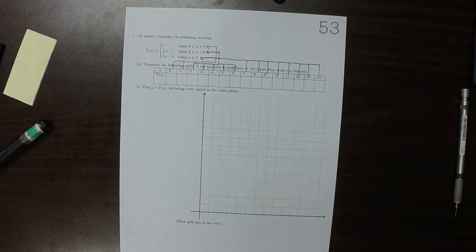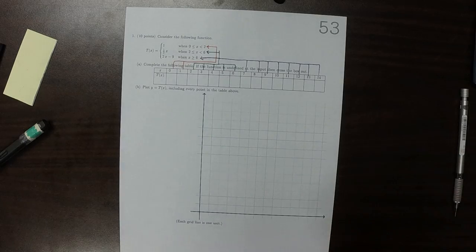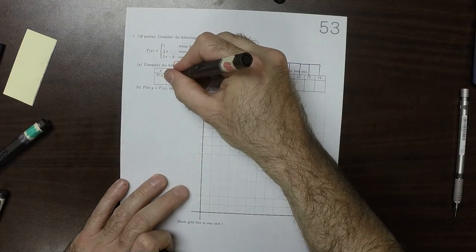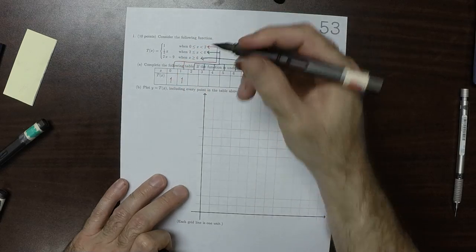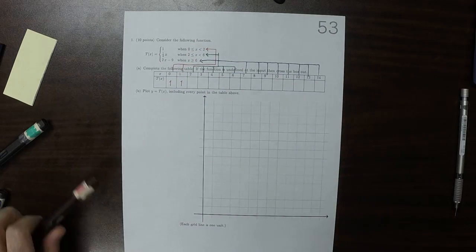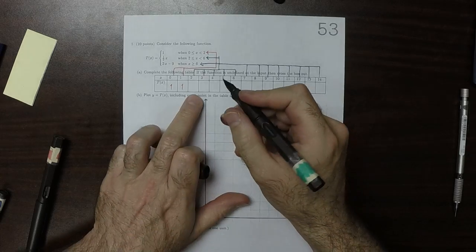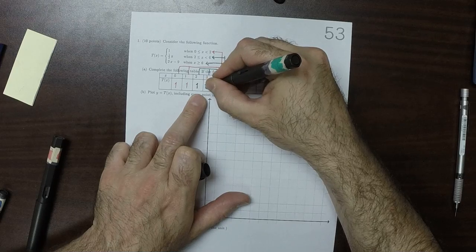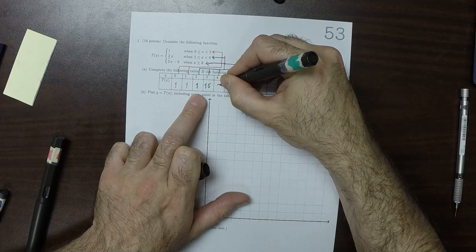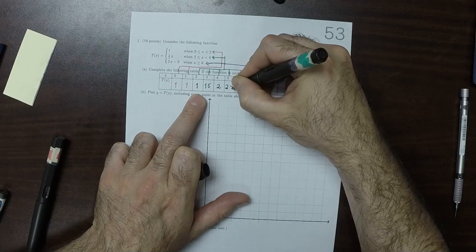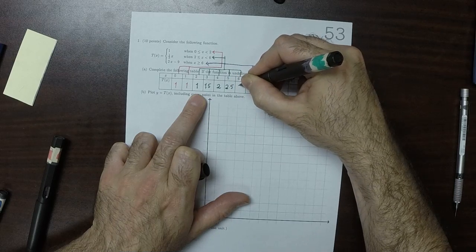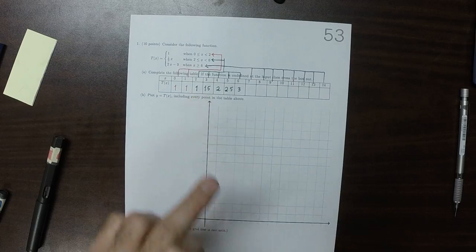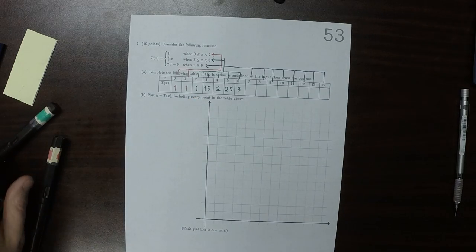So now let's perform our evaluations. The first one's pretty easy, so the red points are 1. So 1, 1. How about the green points? So half of 2 is 1, and then 1.5, 2, 2.5, 3. And then at 7, that would be 2 times 7 minus 9.